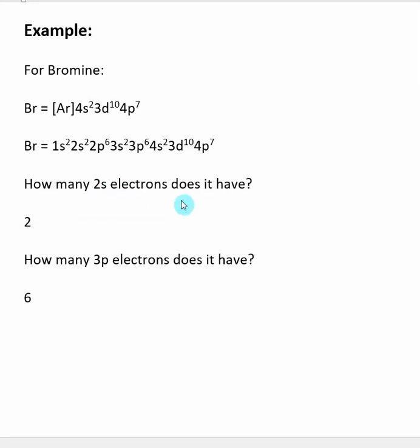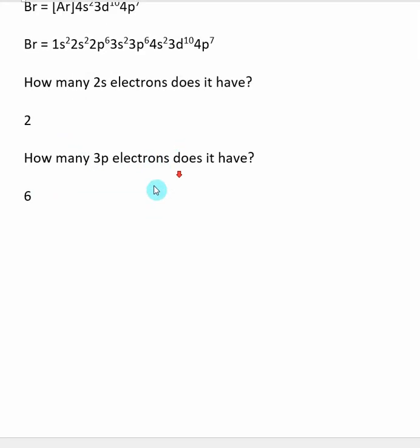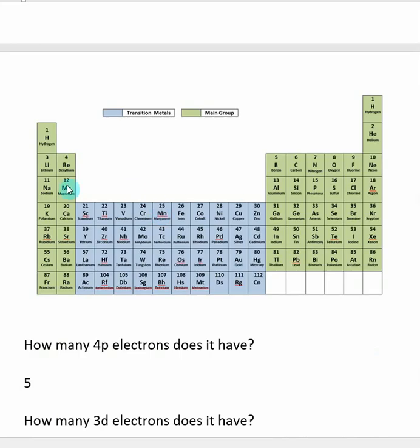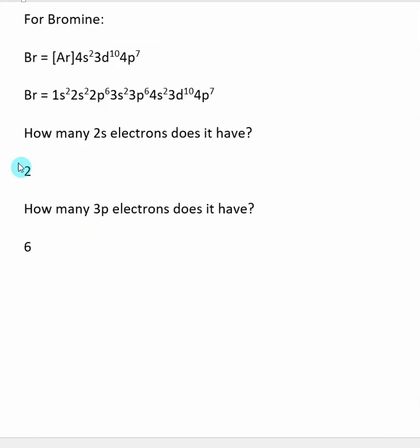How many 2s electrons does bromine have? You can see right here, we have a 2s orbital that has two electrons in it. I could also look at the periodic table and understand to get to bromine, this is our 2s orbital subshell. We need to fill all of these orbital subshells to get to bromine. We have completely filled our 2s orbital subshell, so we know that there's two.